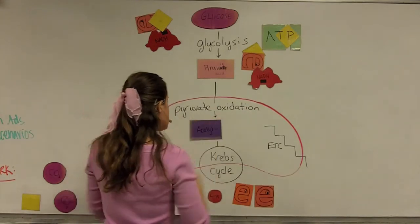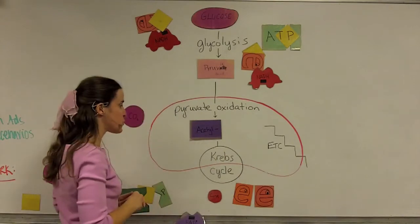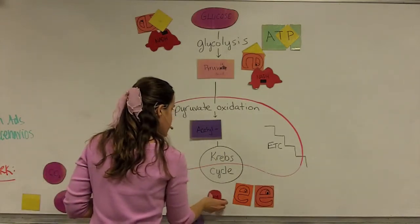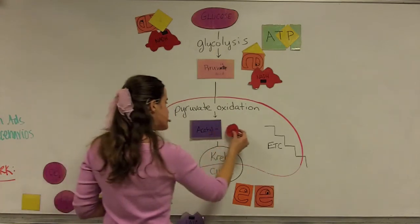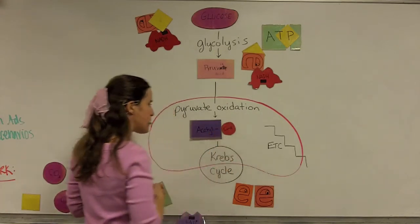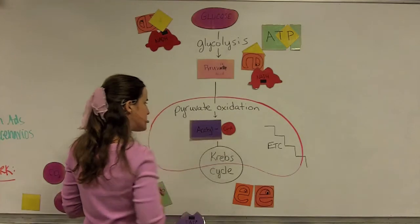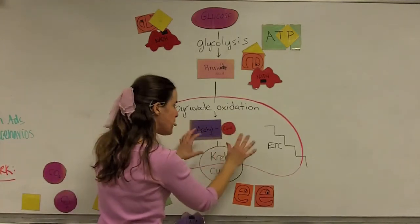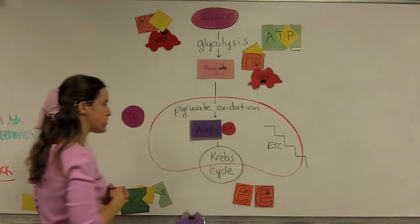For this molecule acetyl to go through the next part of cellular respiration, which is the Krebs cycle, it needs to have some help from what is called a coenzyme. So the coenzyme, called coenzyme A, is attached to the acetyl molecule. And the molecule acetyl coenzyme A is the gateway molecule to go into the Krebs cycle.